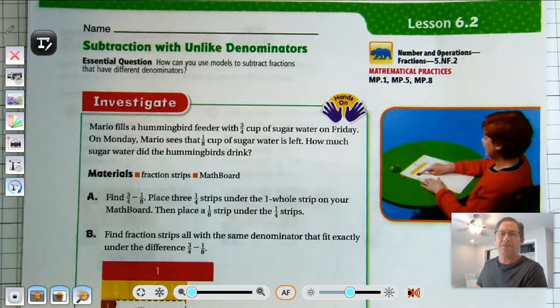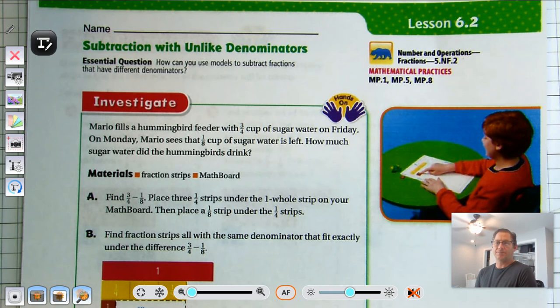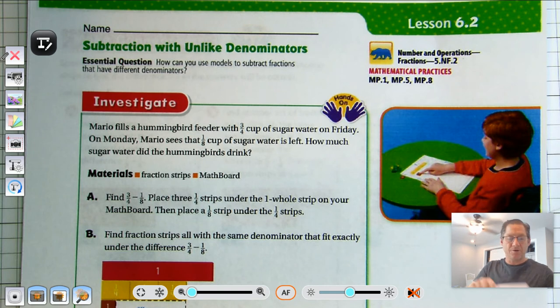Hello everybody. So today we're going to continue with Lesson 6.2, Subtraction with Unlike Denominators. We are on page 257 of the 5th grade Go Math textbook. So let's go ahead and get started.